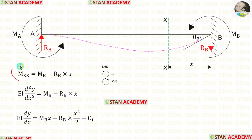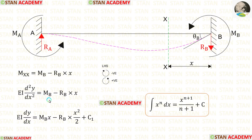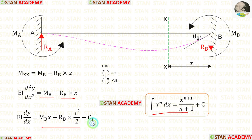Let us equate MXX with EI · d²y/dx². Then let us integrate both sides. When we integrate EI · d²y/dx², we get EI · dy/dx. For the integration of the two terms, we can use the standard formula. Using the formula, we obtain the result. C1 is the constant of integration.